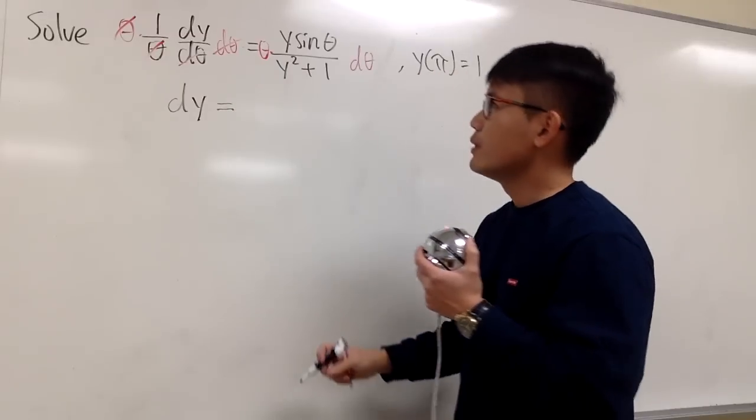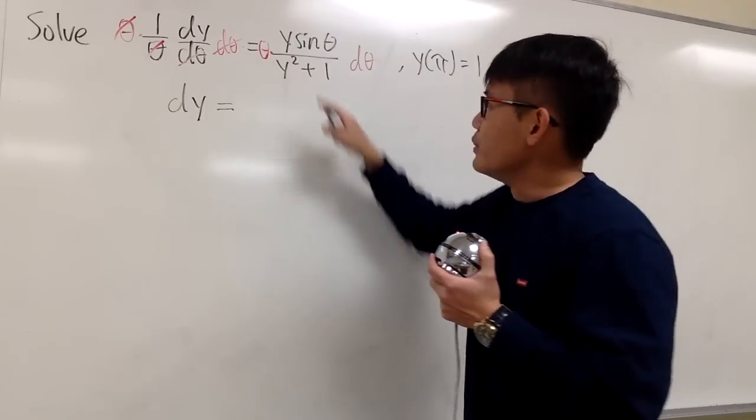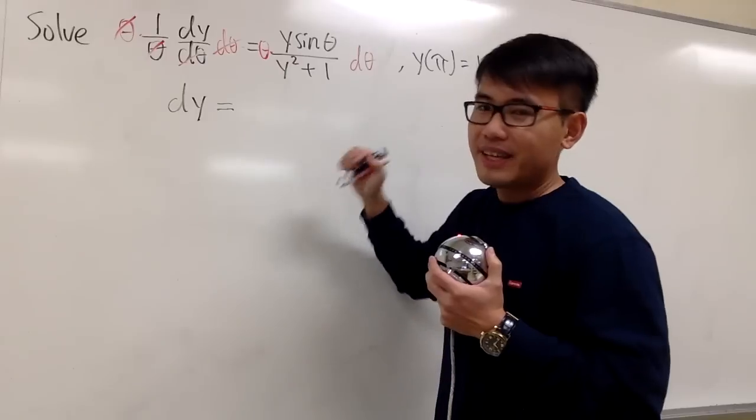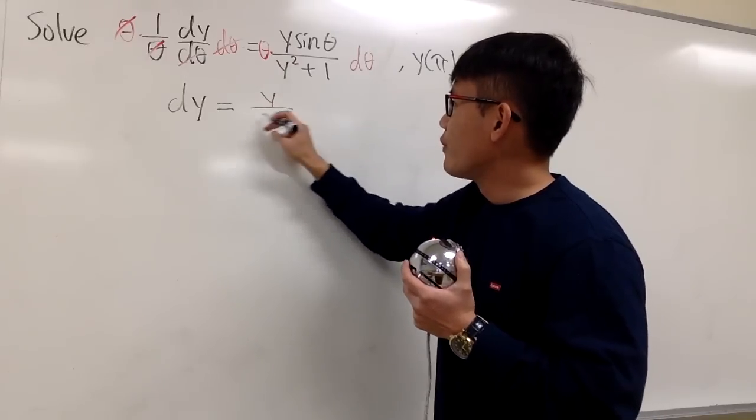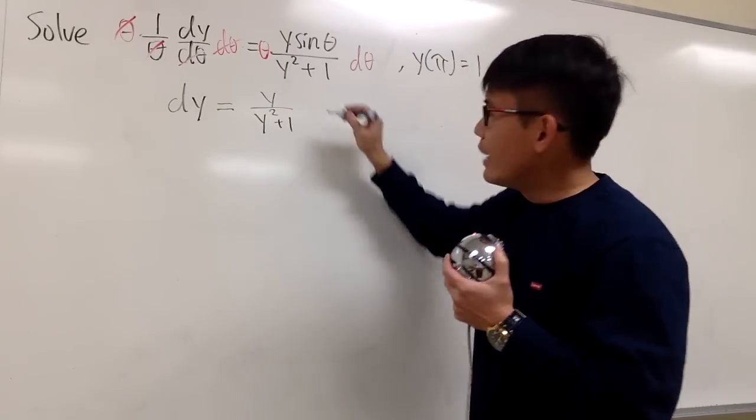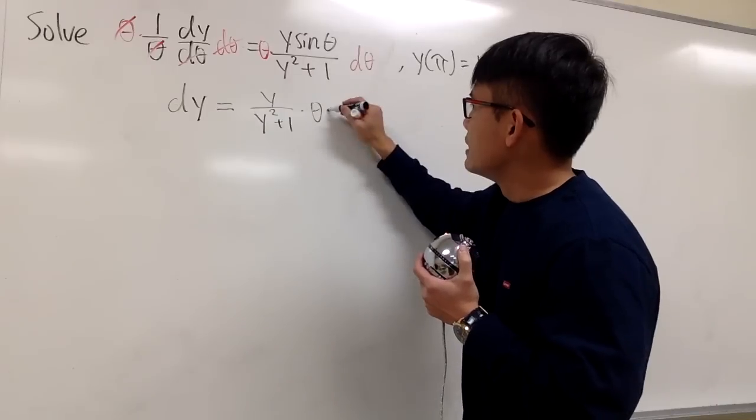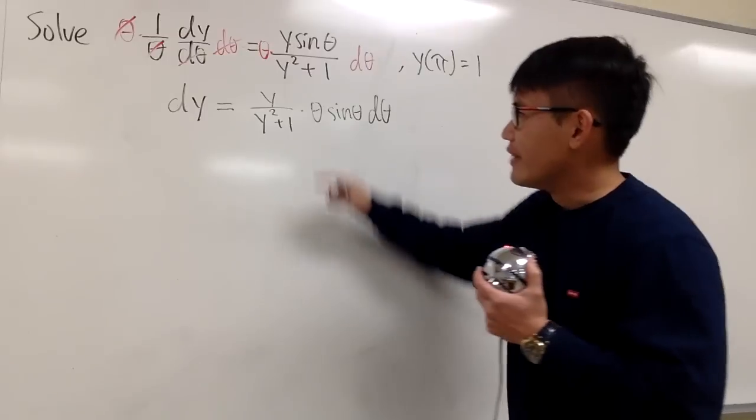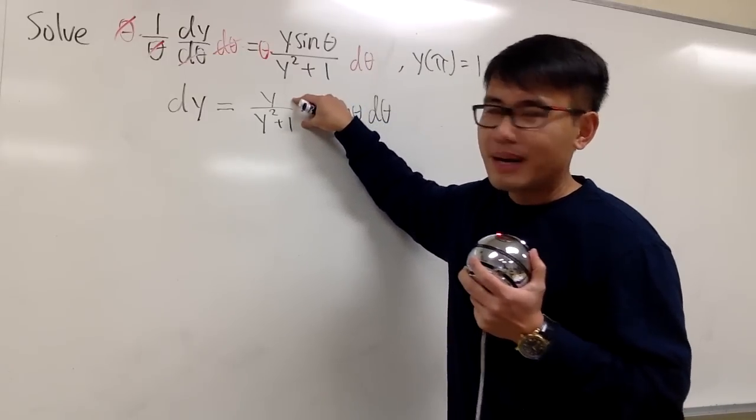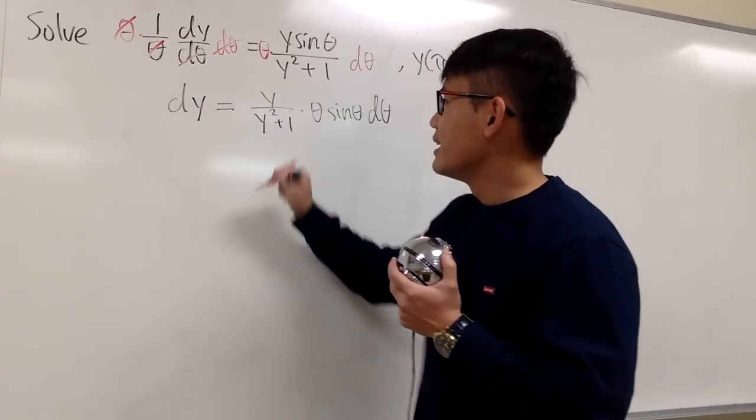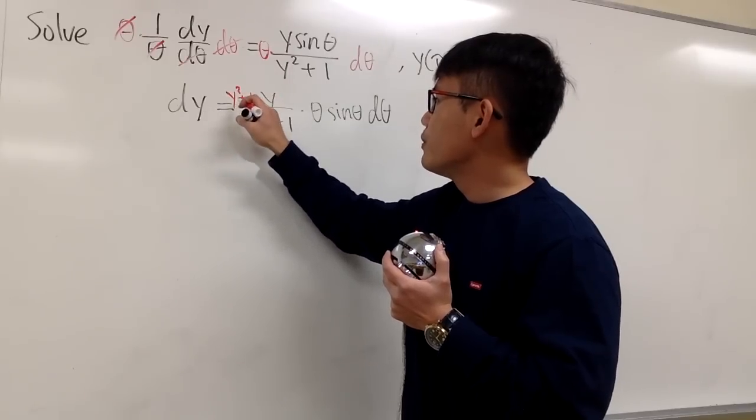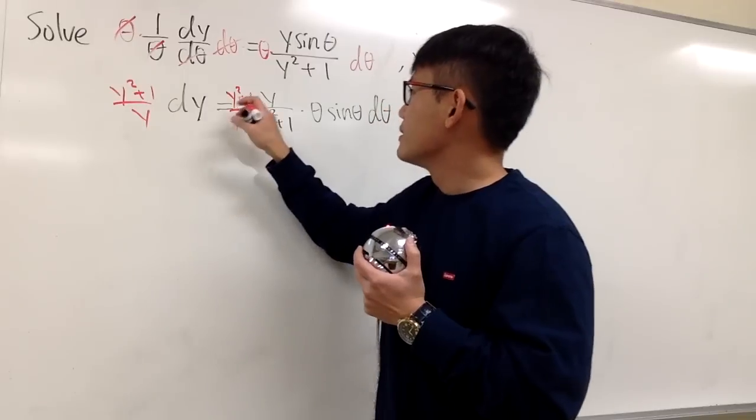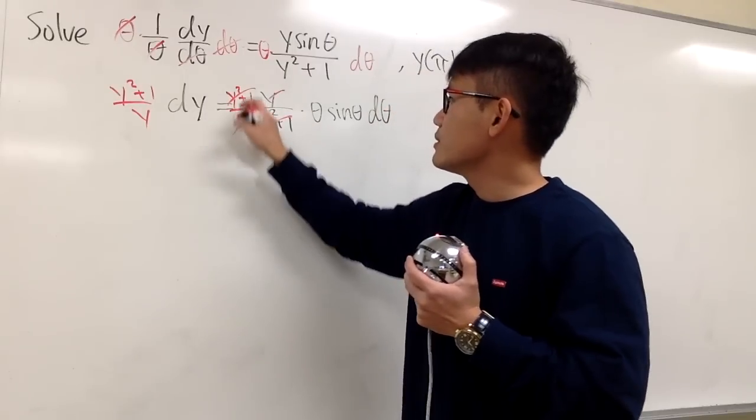And this is equal to, let me write it down this way. We have y times this over that, and then times theta. Let me put the y's together like this first: y over y squared plus 1. And we multiply by theta times sine theta, and then the dθ after that. And now, I just have to multiply both sides by the reciprocal of this to the other side. So let's multiply by y squared plus 1 over y. So that this and this will cancel. And you know we can integrate both sides now.